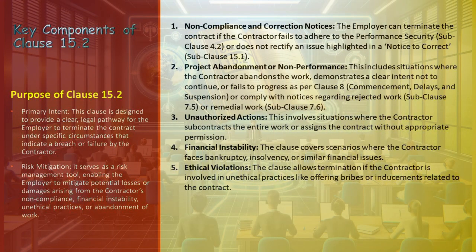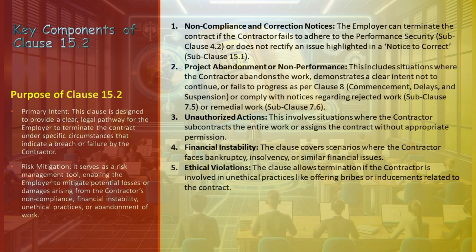Continuing our in-depth analysis of Clause 15.2 in the FIDIC Yellow Book, let's break down the key components. These components represent critical actions or situations that can trigger the employer's right to terminate. Performance Security Non-Adherence: If the contractor fails to comply with performance security requirements as outlined in Sub-Clause 4.2, it provides a ground for termination. The employer also has the right to terminate if the contractor does not address and rectify an issue specified in a notice to correct as per Sub-Clause 15.1.